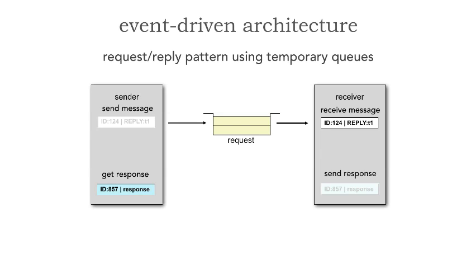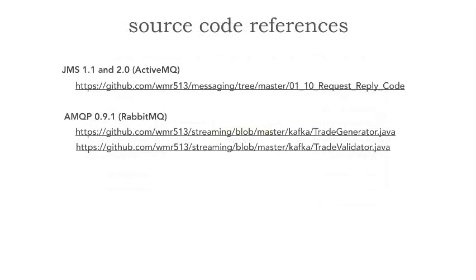There are two ways to apply this request-reply pattern with an event-driven architecture. If you want to see code on how this works for JMS 1.1 and 2.0 using ActiveMQ, go to my GitHub repo at WMR513/messaging and look at the request-reply code. Alternatively, for RabbitMQ, go to WMR513/streaming and look at two classes — a trade generator, which generates messages, and a trade validator, which picks up those messages, validates the trade, and sends it back on a blocking wait.